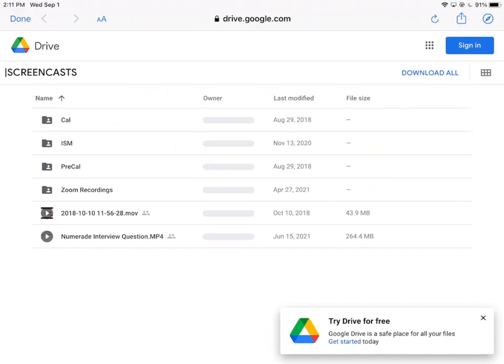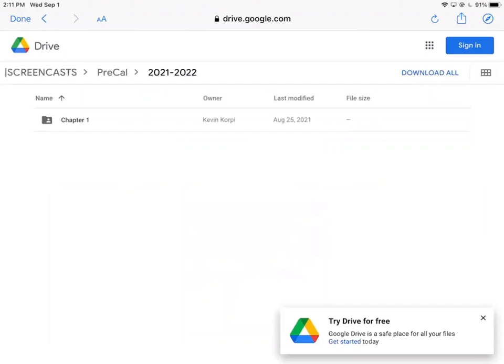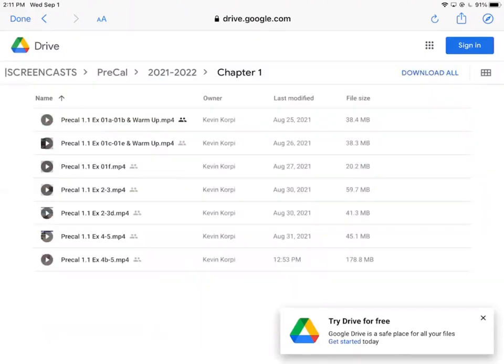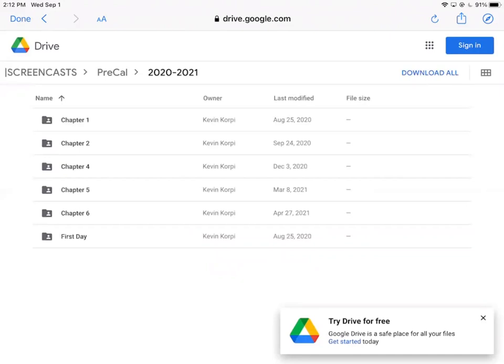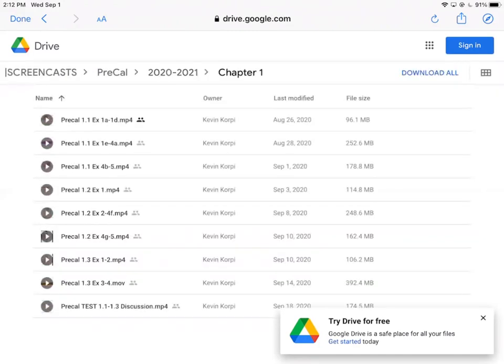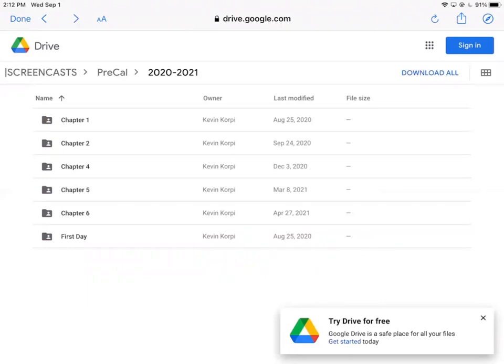So I just sent you to the entire screencast Google Drive folder and now you can navigate to wherever you want. You can watch some ISM videos that I did last year, you can even watch calculus videos if you want. But click on pre-cal and then there's 21-22 chapter one. If you click on a video there and you can't hear, just go back and try a previous year because the notes really haven't changed much in several years.